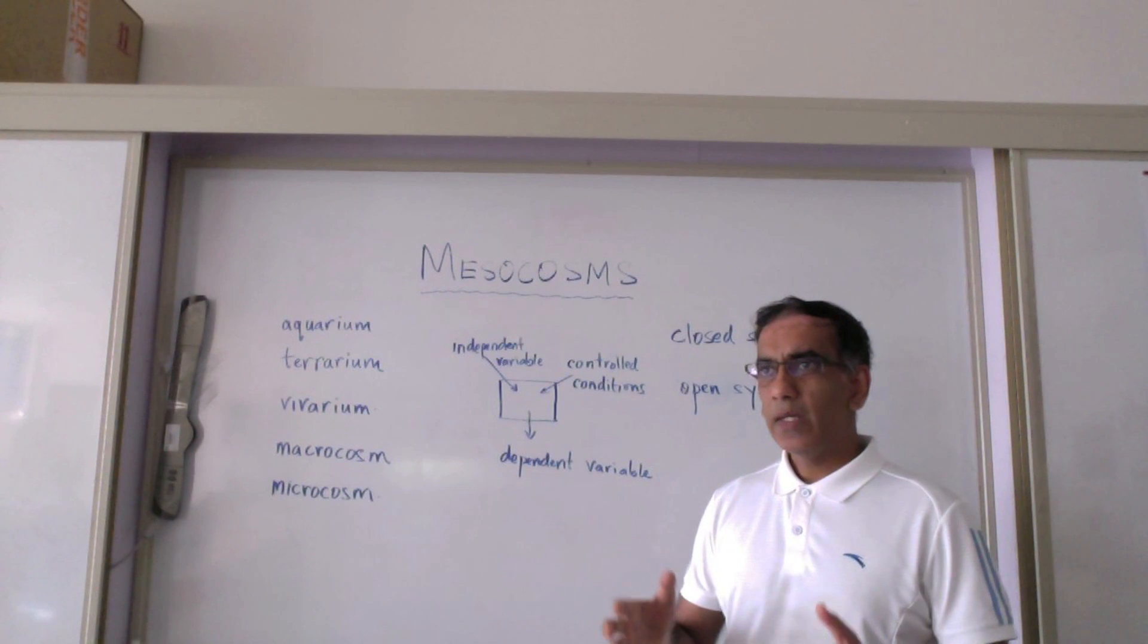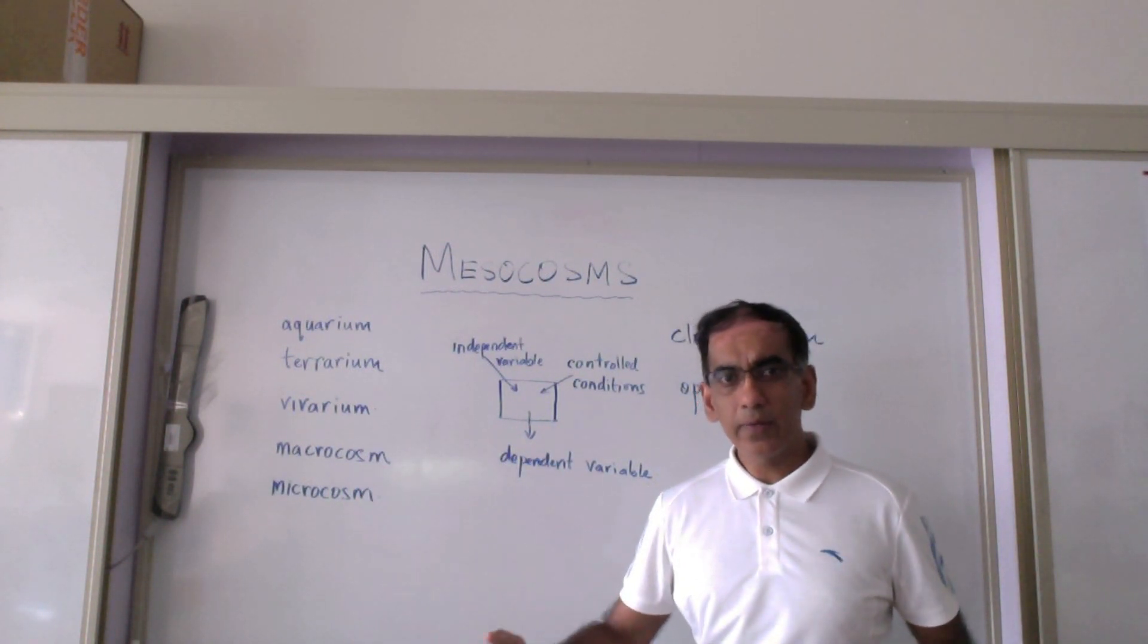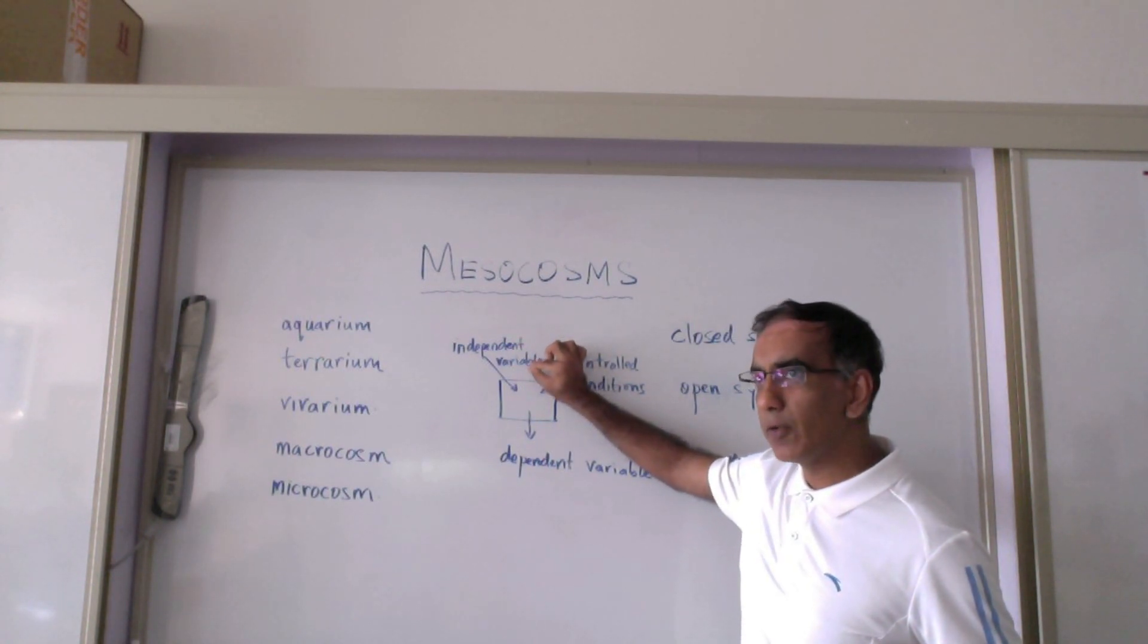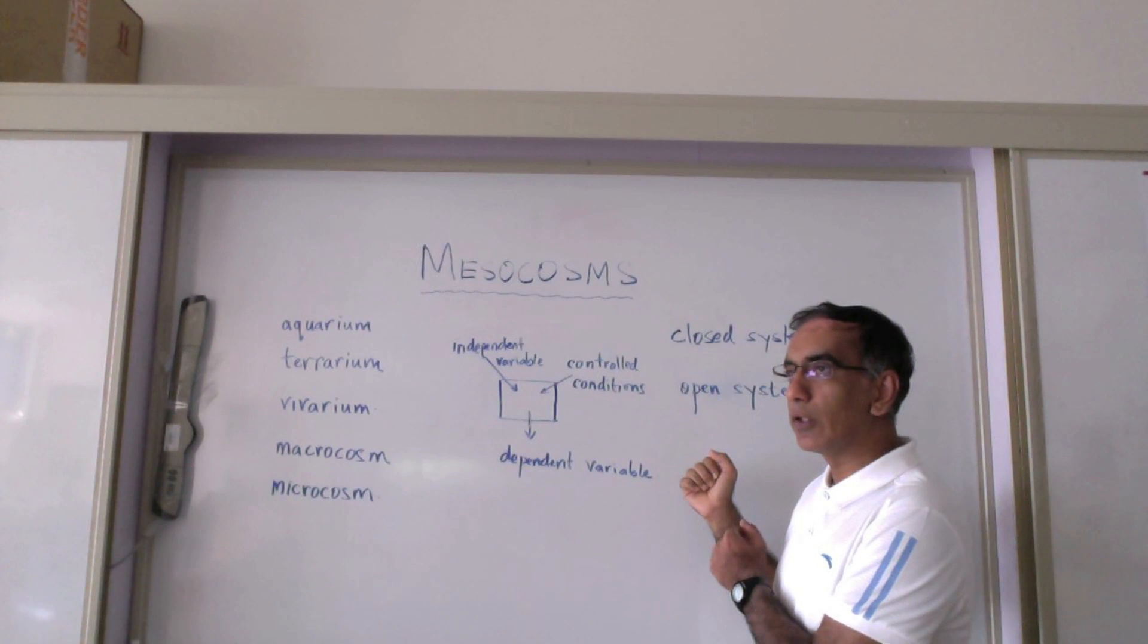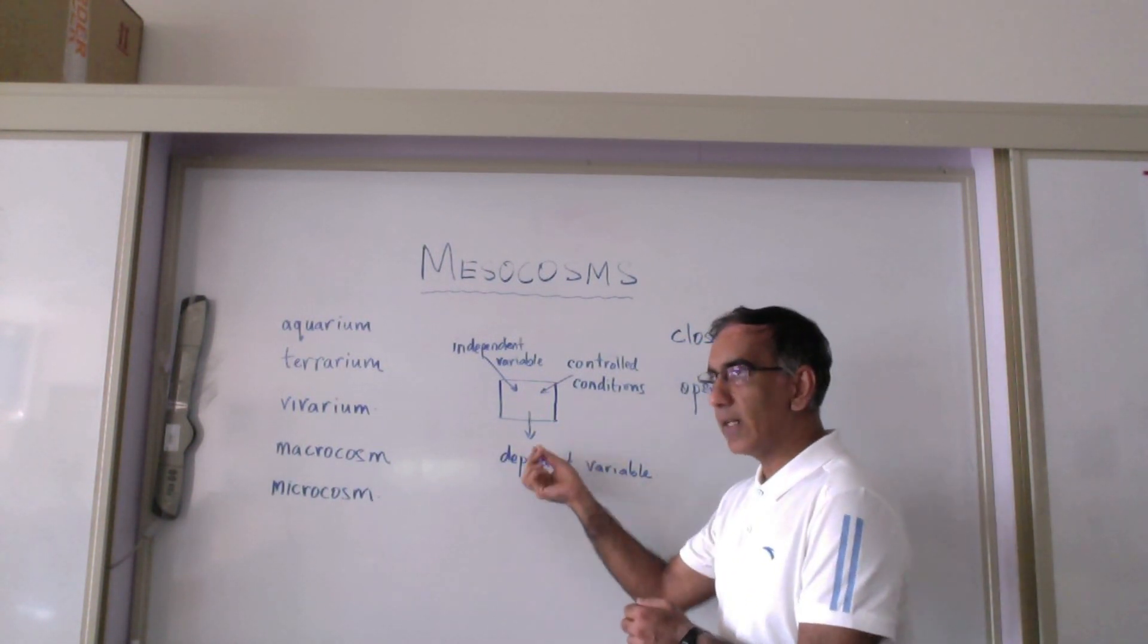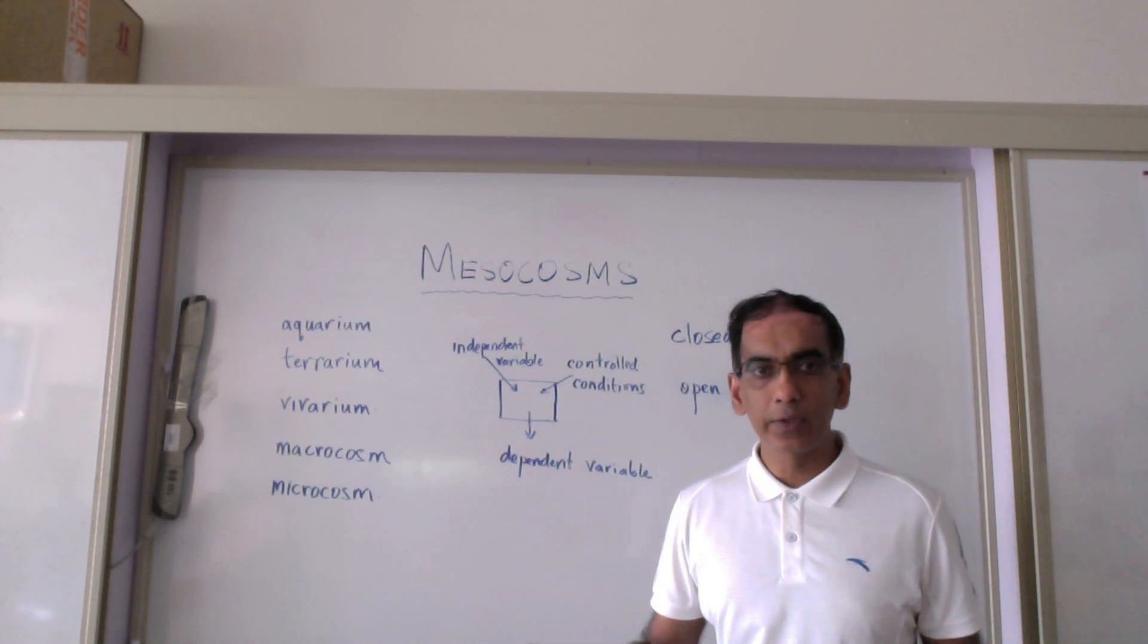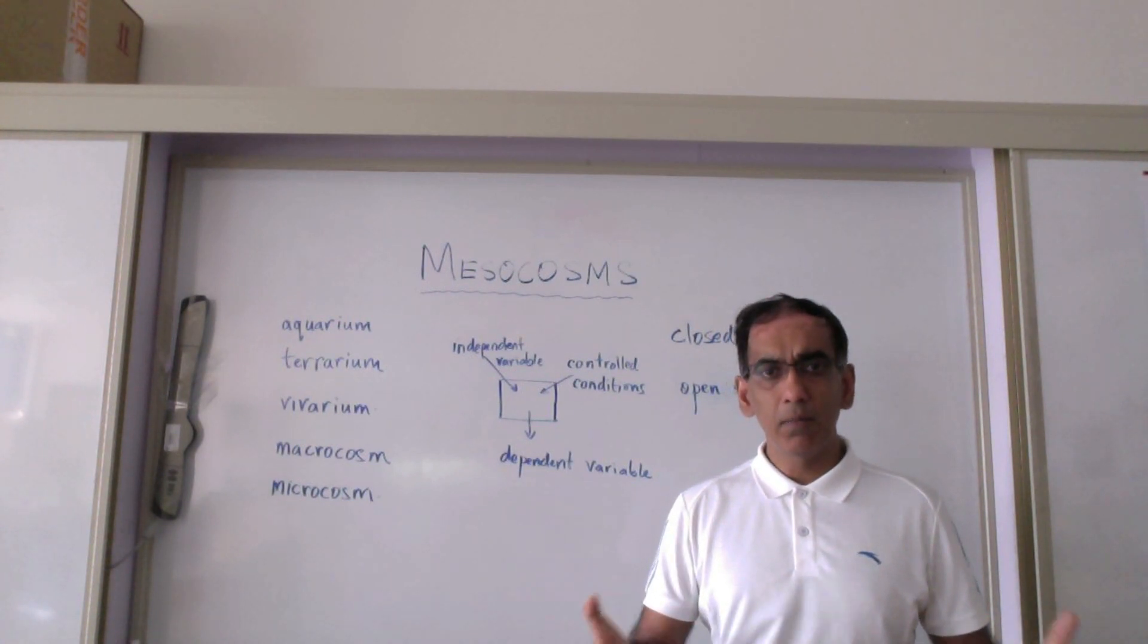And the mesocosm is particularly useful because it allows the researcher to set up a controlled environment—whether that environment be a closed system or an open system—but a controlled setting where a single or a few independent variables can be manipulated while other variables are controlled. It would then give reliable results with respect to some effect or the dependent variable. So the term mesocosm is really just a fancy biological term for some controlled system that you can have as a model of the bigger natural environment or the macrocosm.